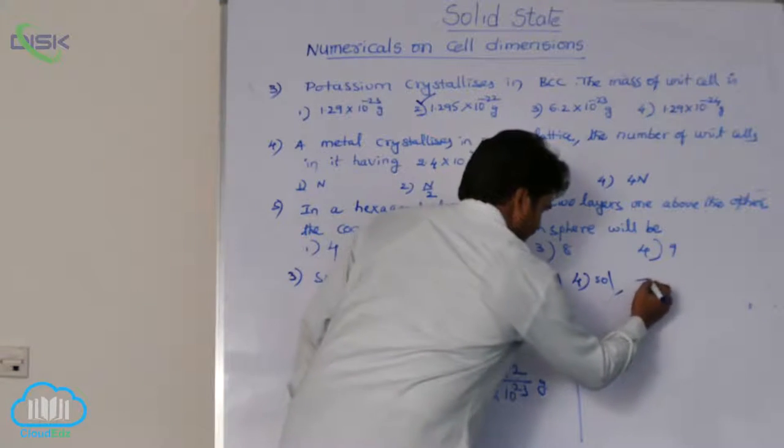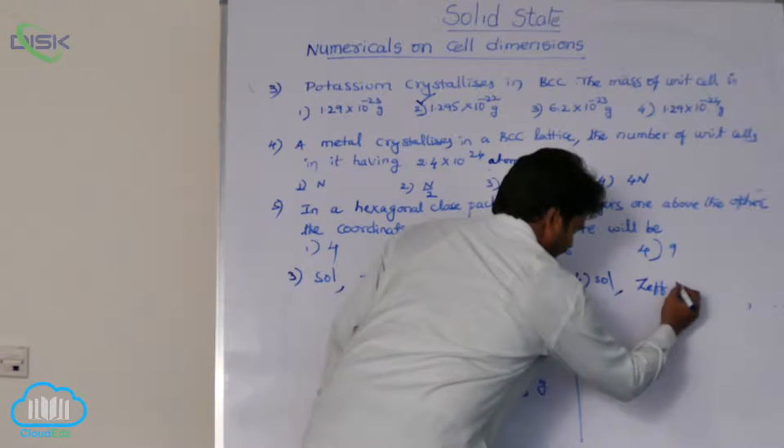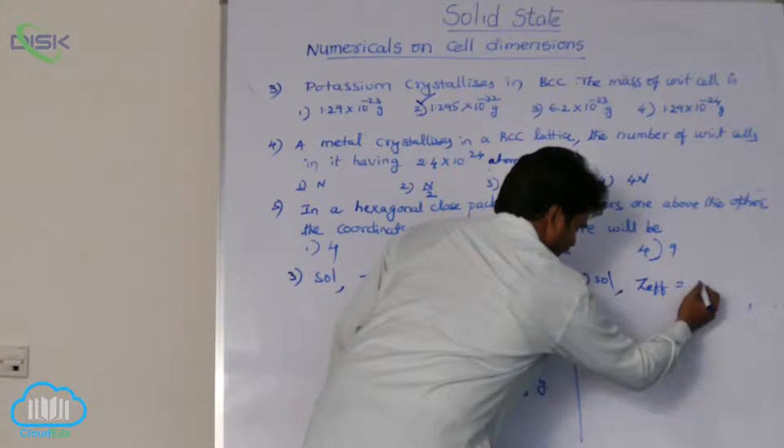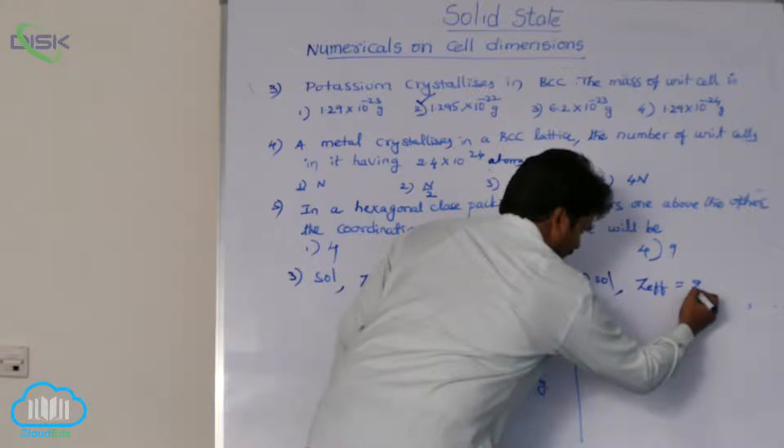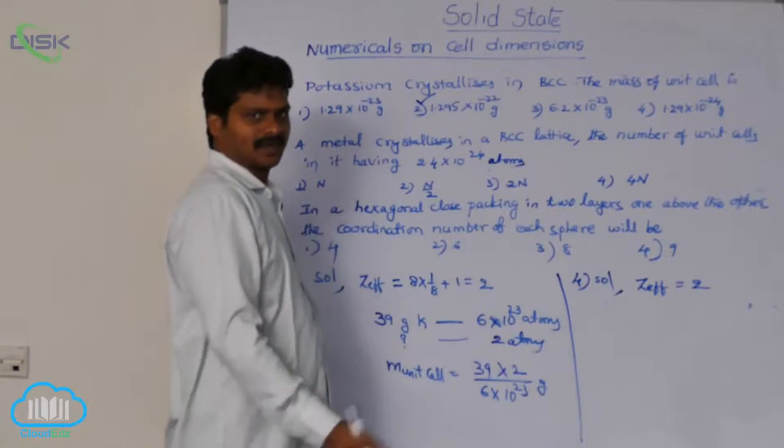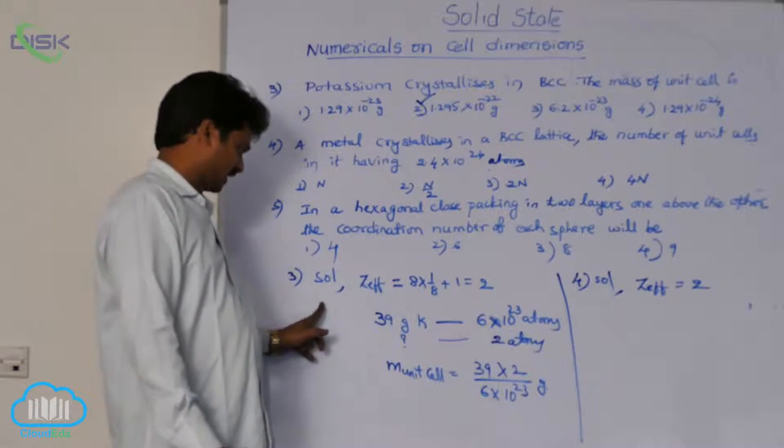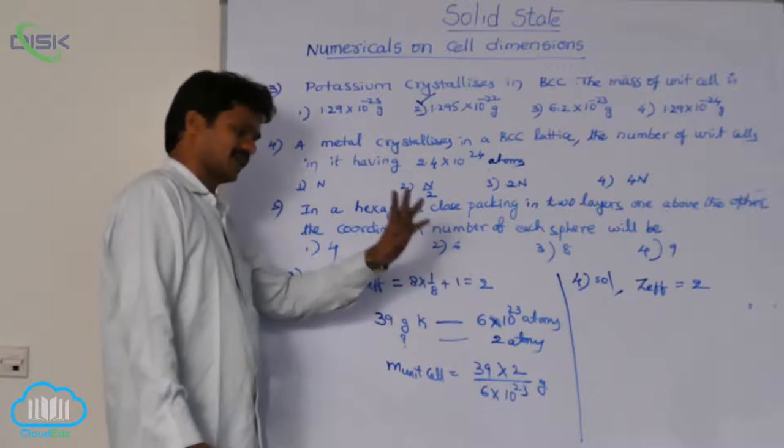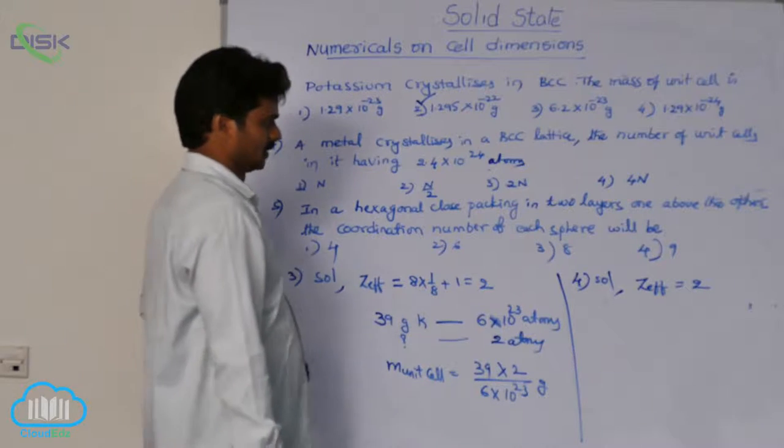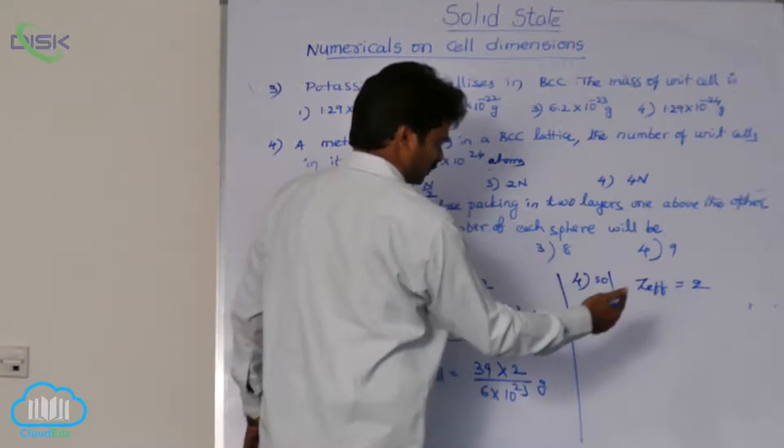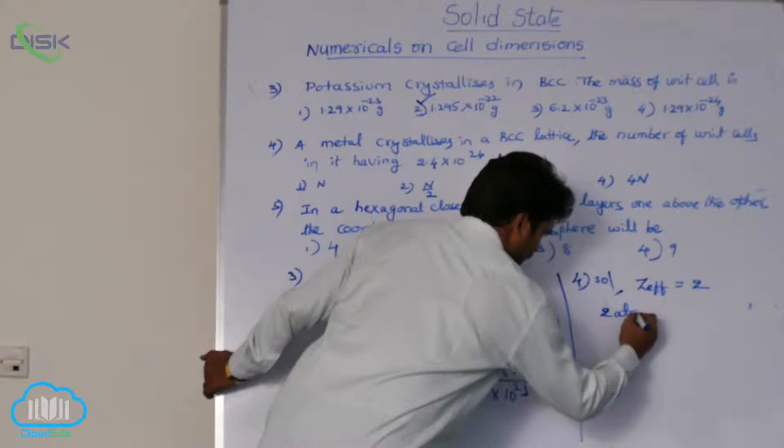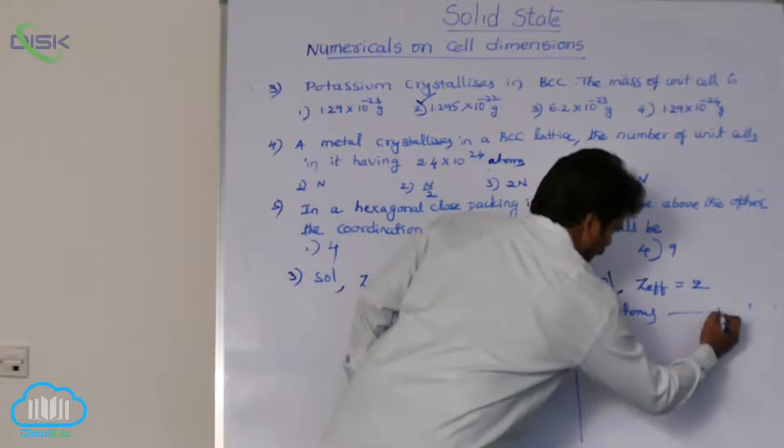First tell me what is the effective number of atoms in BCC? Yes, in BCC total effective number of atoms is 2. Already in the previous question we calculated that 8 into 1 by 8 plus 1 means 2. If effective number of atoms is 2, means 2 atoms form 1 unit cell.